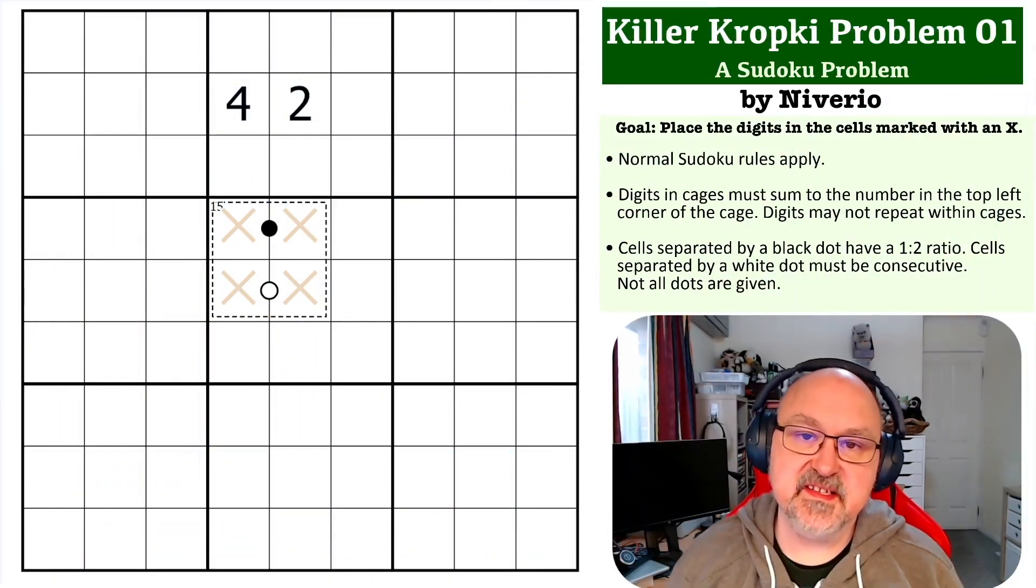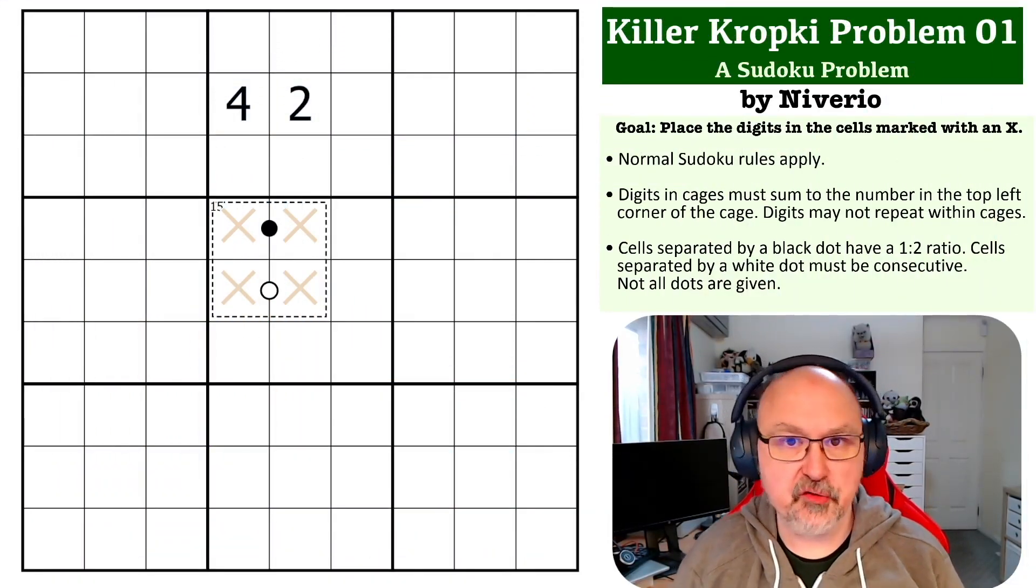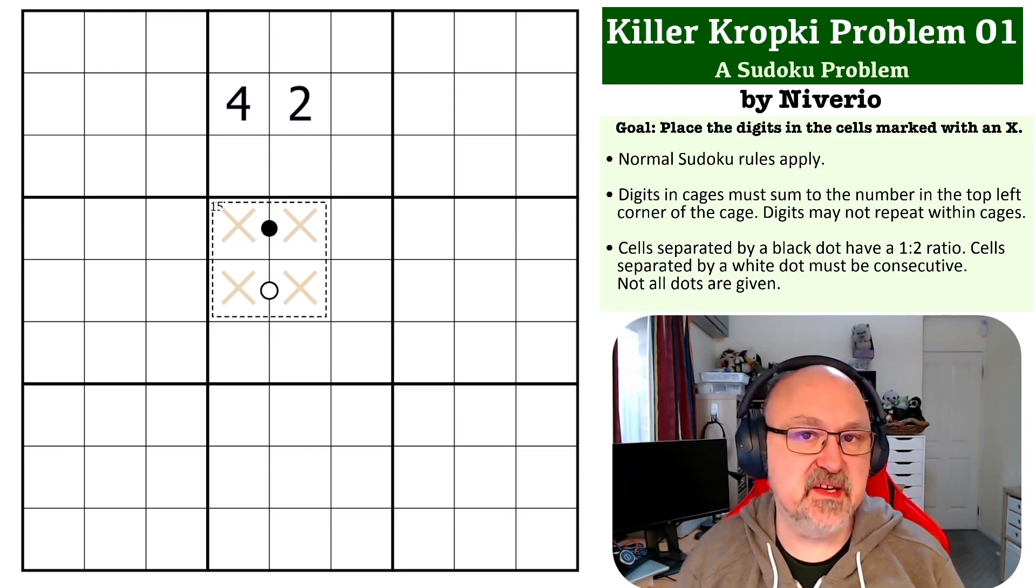Hey, this is Bremster, and this is the next problem in my Sudoku problem series. This is Killer Kropki Problem Number One, where we're combining killer cages with kropki. This one was sent in by Navario.